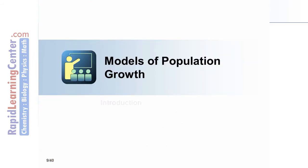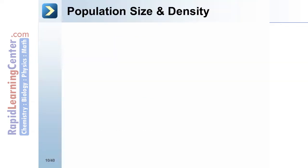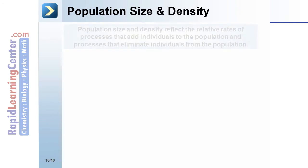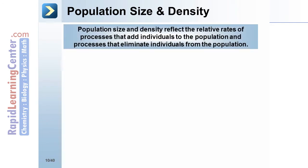In this segment we will introduce exponential growth and logistic growth. Population size and density reflect the relative rates of processes that add individuals to the population and processes that eliminate individuals from the population.